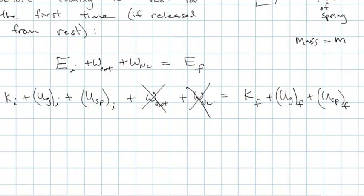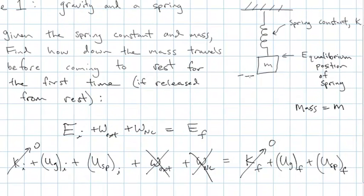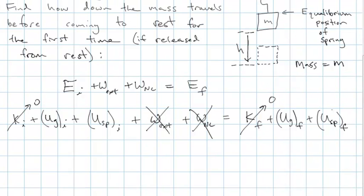At the beginning, nothing is moving, so I can set my initial kinetic energy to zero. And at the end, nothing is moving, so I can set my final kinetic energy to zero — the mass comes to rest momentarily. At the beginning, the mass is going to be at a higher elevation than it will be at the end. It's going to drop some distance — what should we call that? H. We need to figure out our gravitational potential energies.